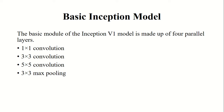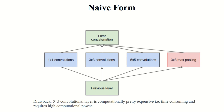In the basic inception model, 1x1, 3x3, and 5x5 convolutional layers are added in parallel along with a 3x3 max pooling layer. Convolution layers extract features from the input, and pooling layers reduce dimensionality. So the basic model is wide — layers are added in parallel rather than stacked deeply. However, this basic model still has a drawback.